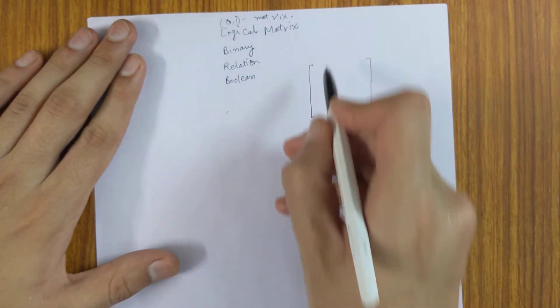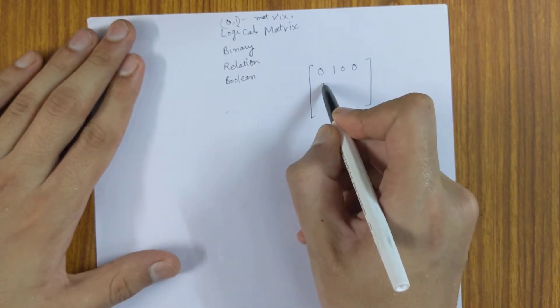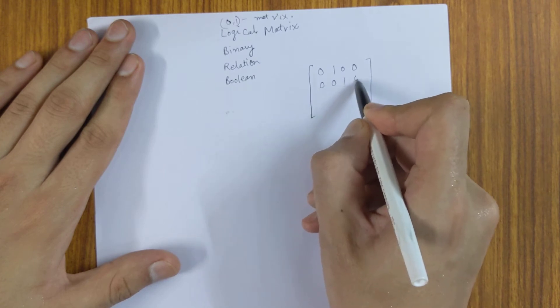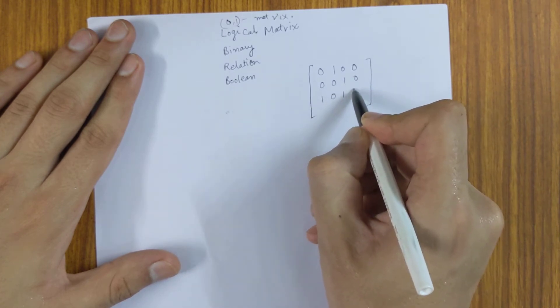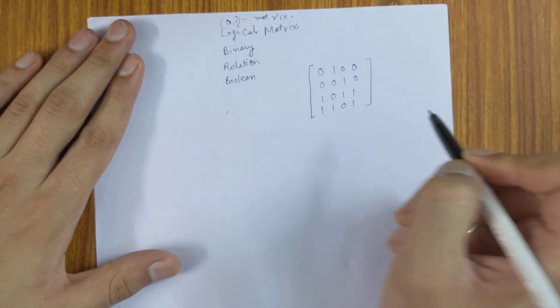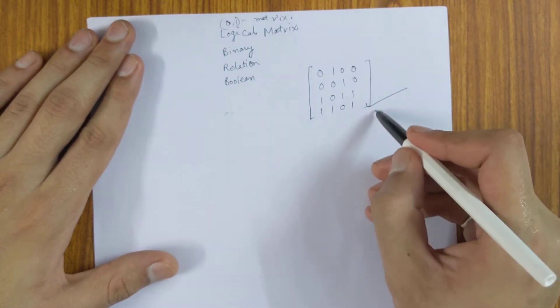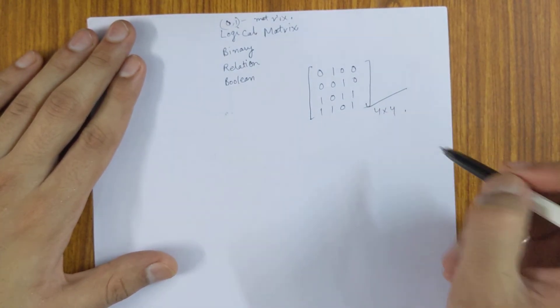Okay, so for example, this is a boolean matrix of size four by four.